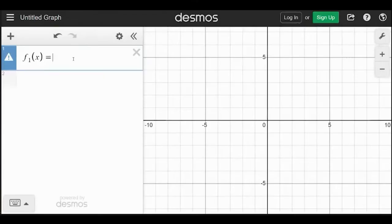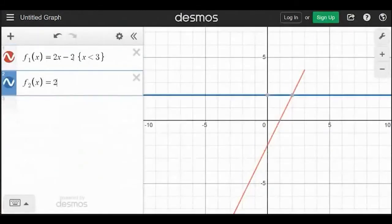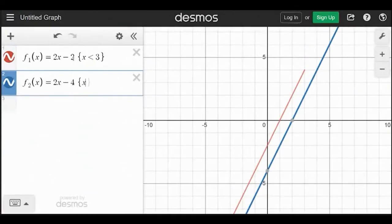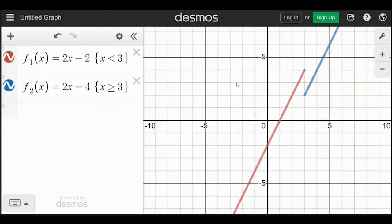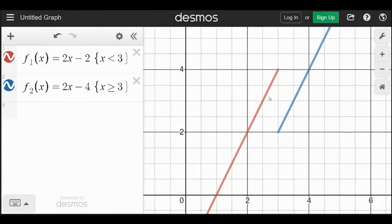So to kind of show you this, I'm going to graph this. One is equal to two x minus two, and we're going to go x is less than three. f two of x is equal to two x minus four, and that's when x is greater than or equal to three. And if you notice, it is not continuous there. You can also use the limit definition of continuity to show that it's not continuous. But there is clearly a jump.